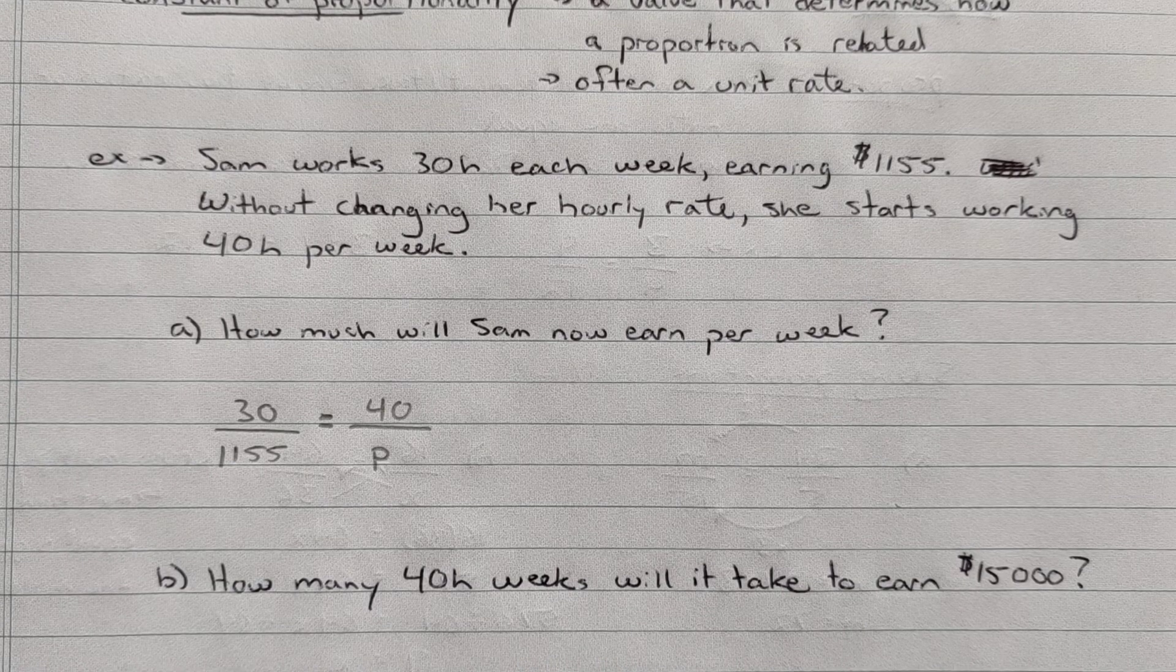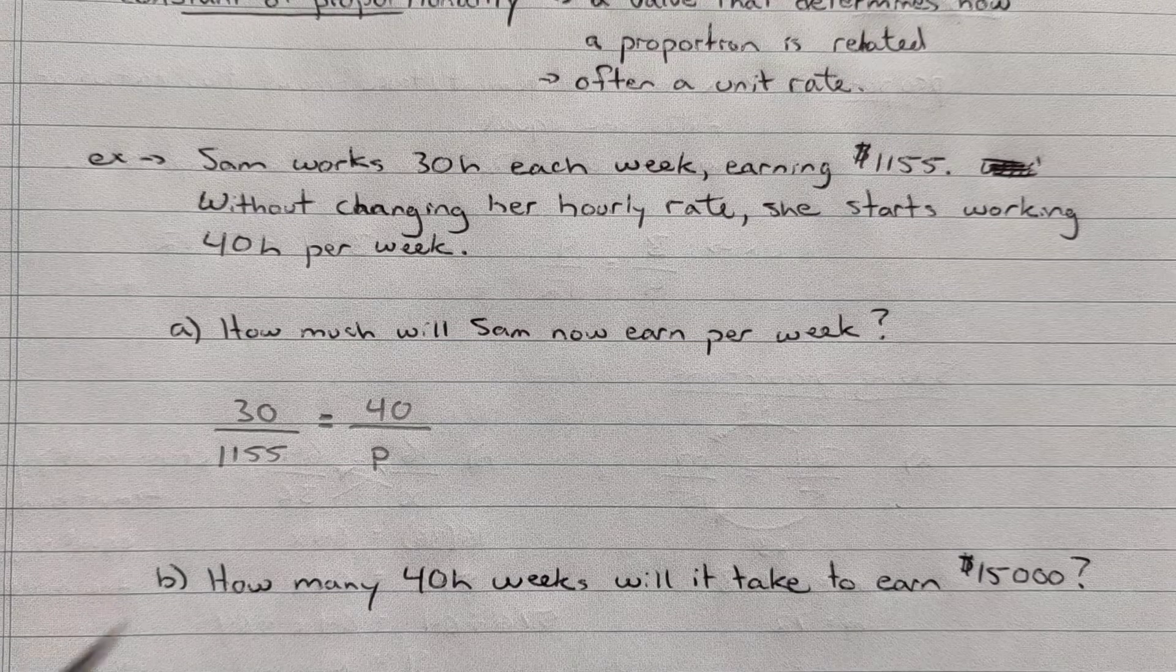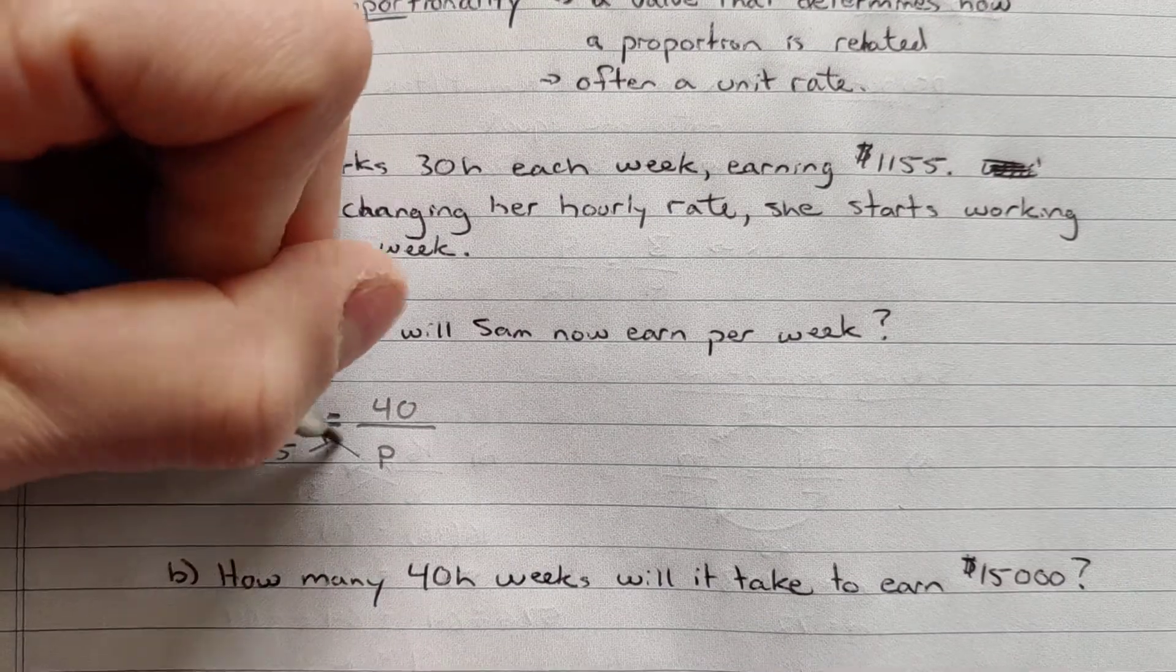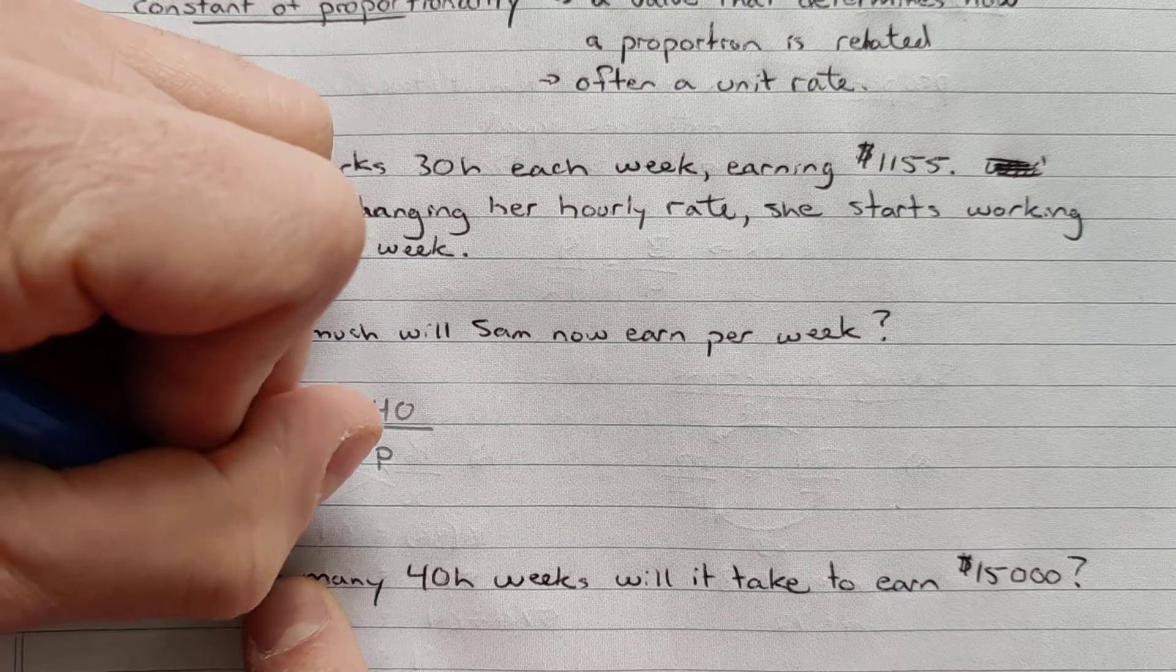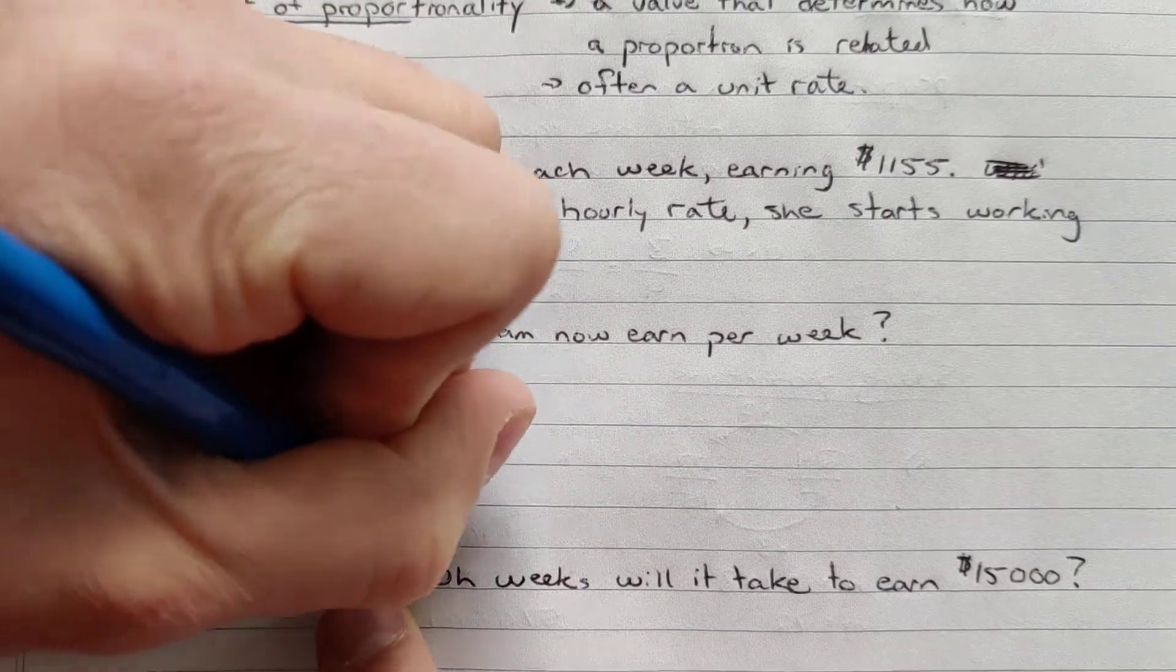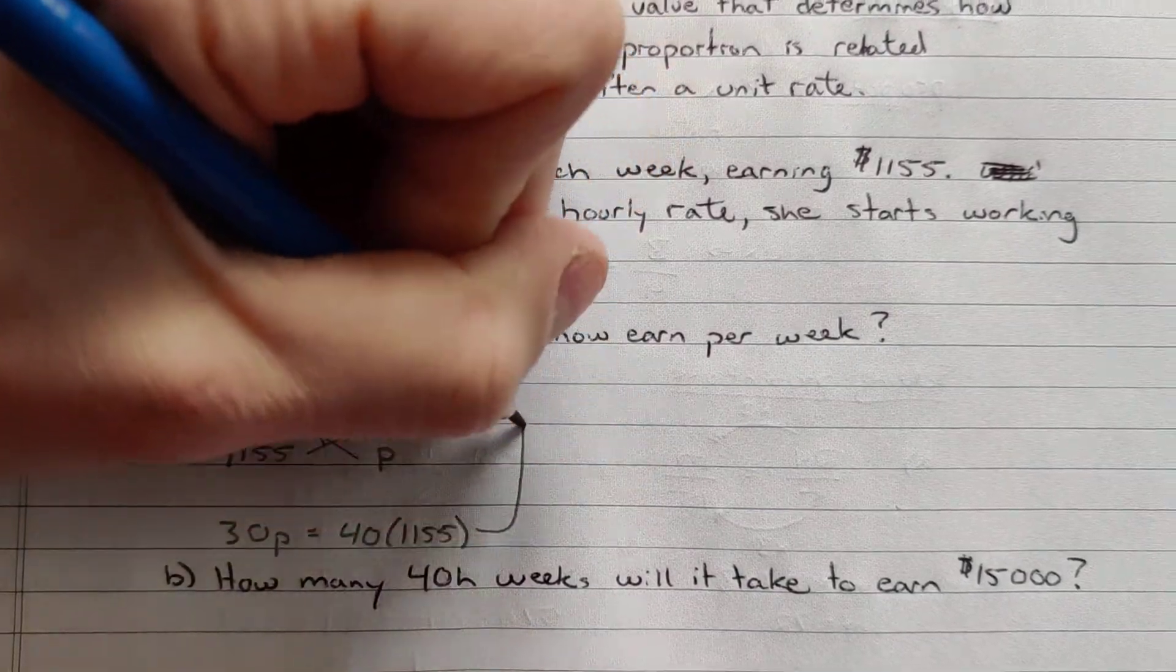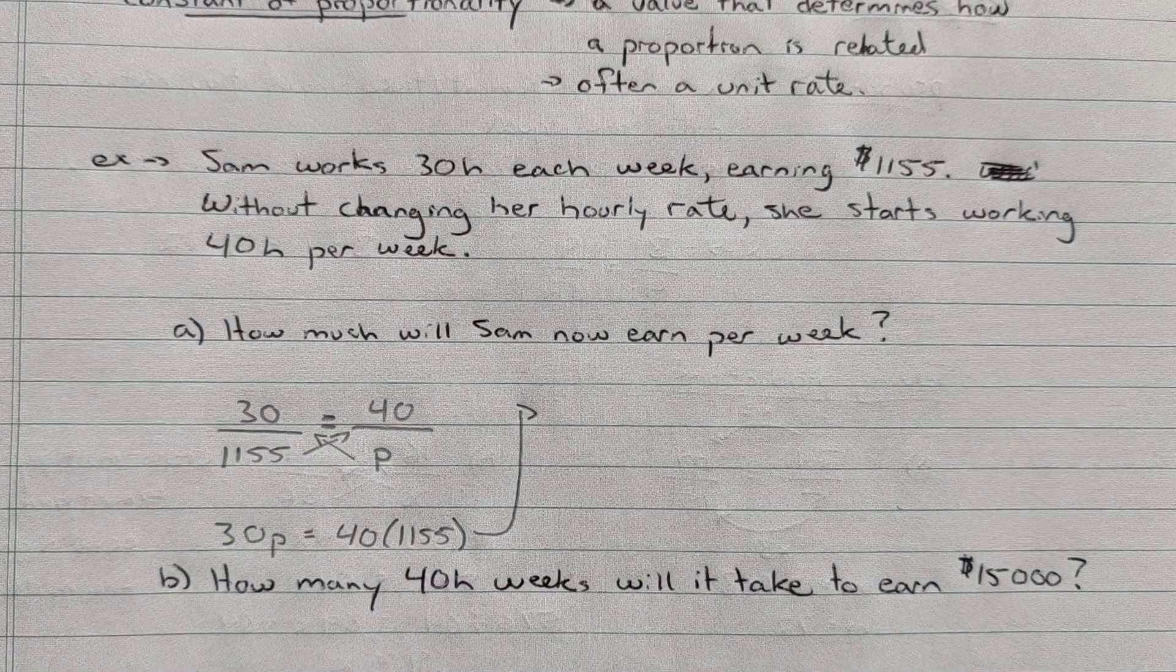So we have now a proportion set up. We can use our cross-multiplying to solve this. We're going to cross-multiply these. And when we do, we'll get 30P equals 40 times 1,155. So I'm going to continue this up here. So I'm going to multiply the 40 by 1,155.